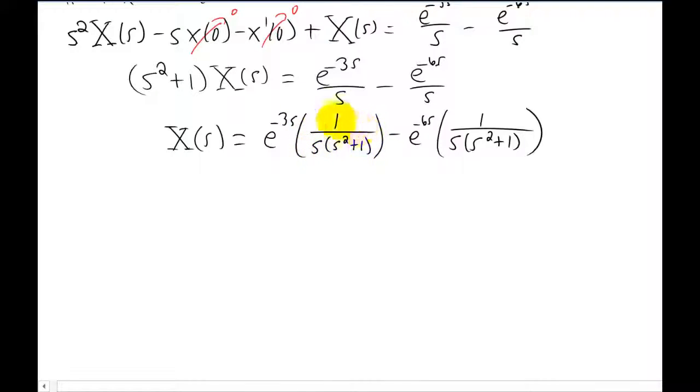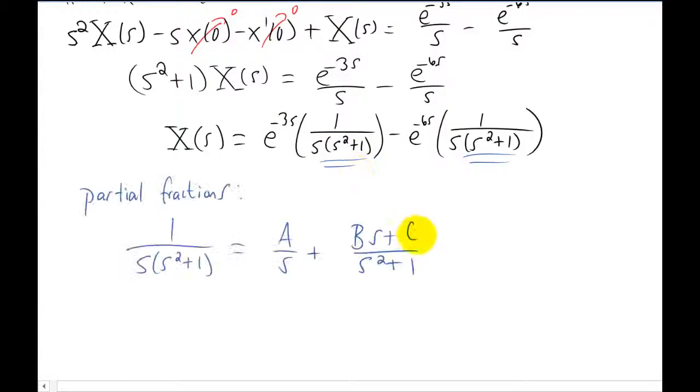This term right here is something that we need to split up into two pieces using partial fractions. The cool thing is that that term and that term are exactly the same so we can just do partial fractions once. You'll also notice as we did in class I'm pulling out the exponential from the numerator and the reason I'm doing that is because it makes the partial fraction a whole lot easier. So I've set up the partial fraction now I'm going to multiply through by the denominator and see if I can solve for a, b, and c.